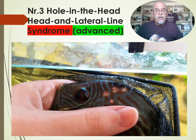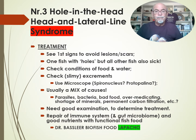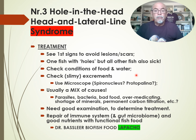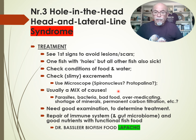In more advanced cases, you see big holes appear — that's because you've seen it too late. That's advanced and it's going to give scar tissue. You will hardly have a chance to repair it completely. But you can still treat and save the fish. Act when you see the first signs to avoid scars and lesions. One fish with holes means all the other fish may also be sick. Check the conditions of food and water. Check the slimy excrements with a microscope — you might see spironucleus parasites, or maybe also protopalina. Usually it's a mix of causes: parasites, bacteria, bad food, over-medicating.